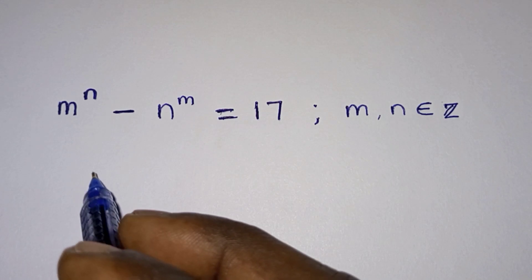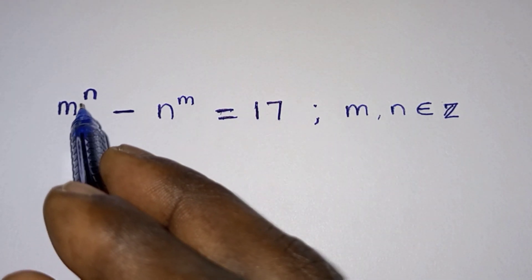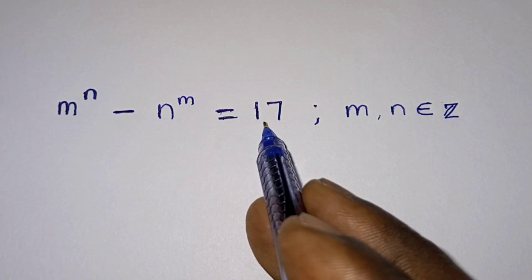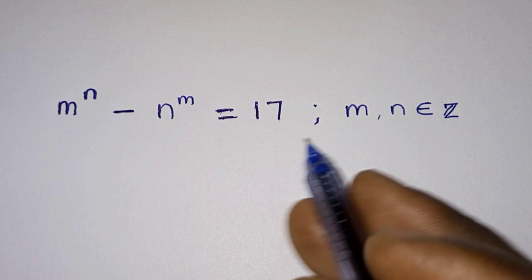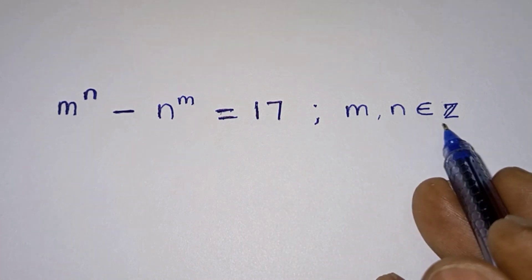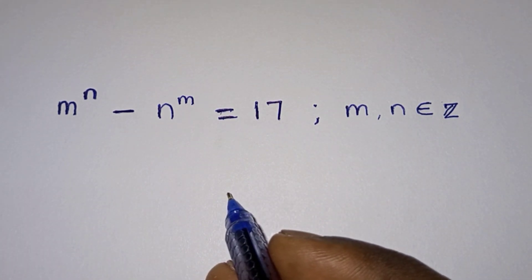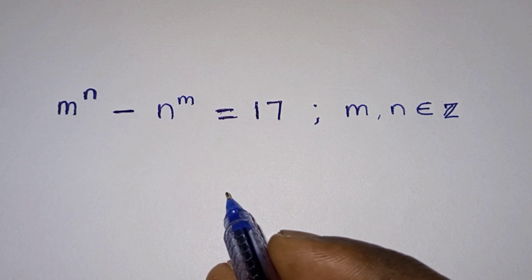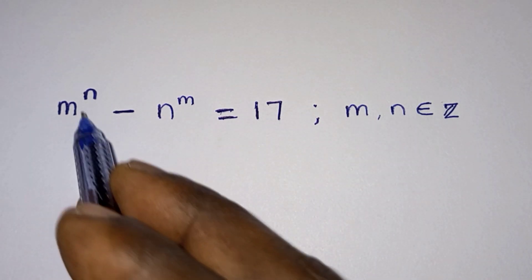Hello everyone. In this video we have this challenging problem: we are given m to the power n minus n to the power m is equal to 17, and we have to find the values of m and n where m and n are integers. Before we start, if you are new here please subscribe to my channel and like the video. Now let's get started — first let's analyze the problem.